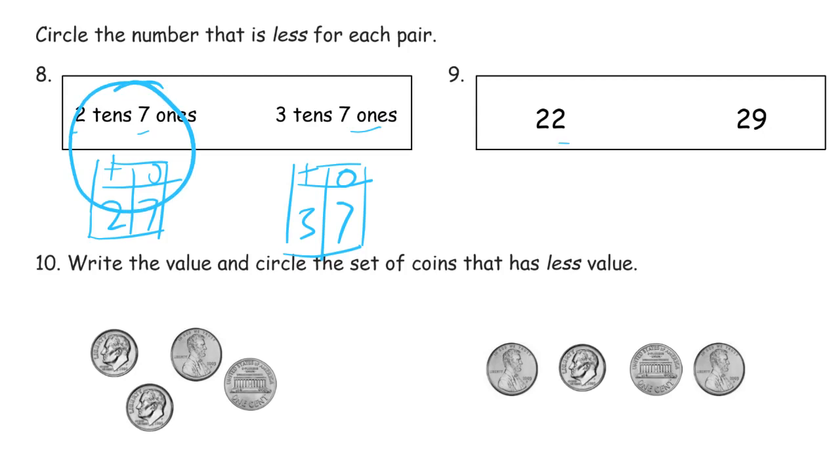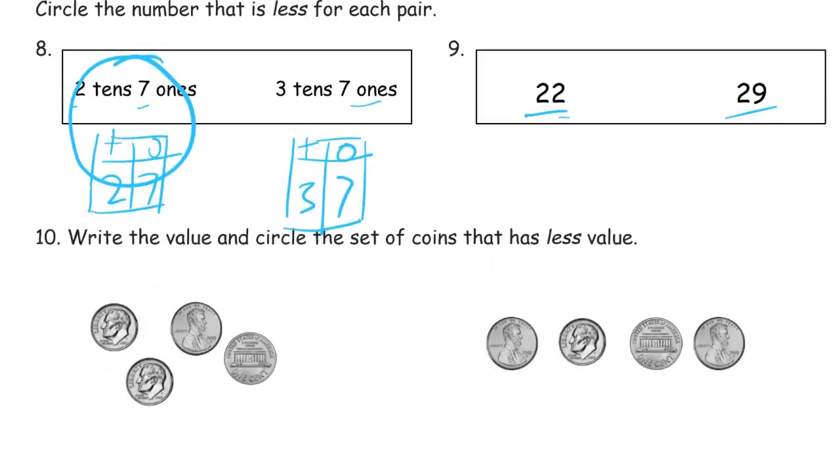And here we have 22 and 29. You don't have to draw a picture of it, but you could if you wanted to. But I know that 22 is less than 29 so I'm just going to circle it.